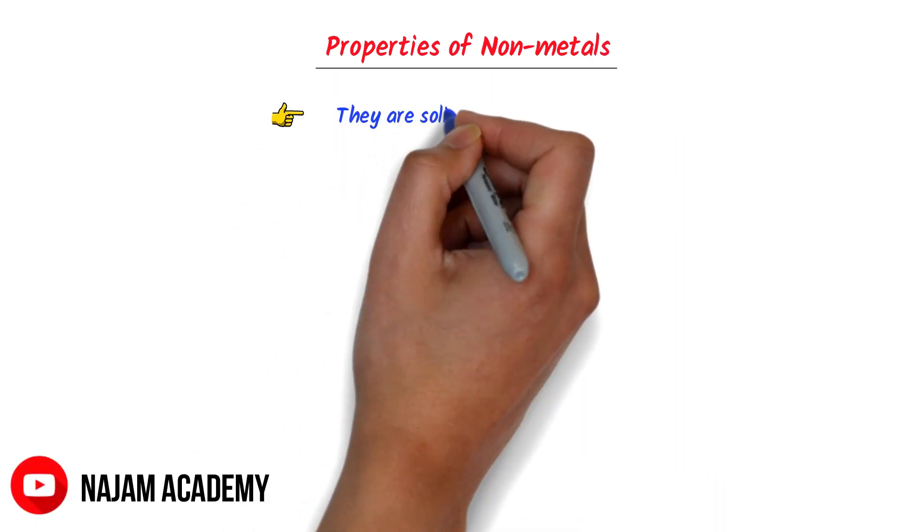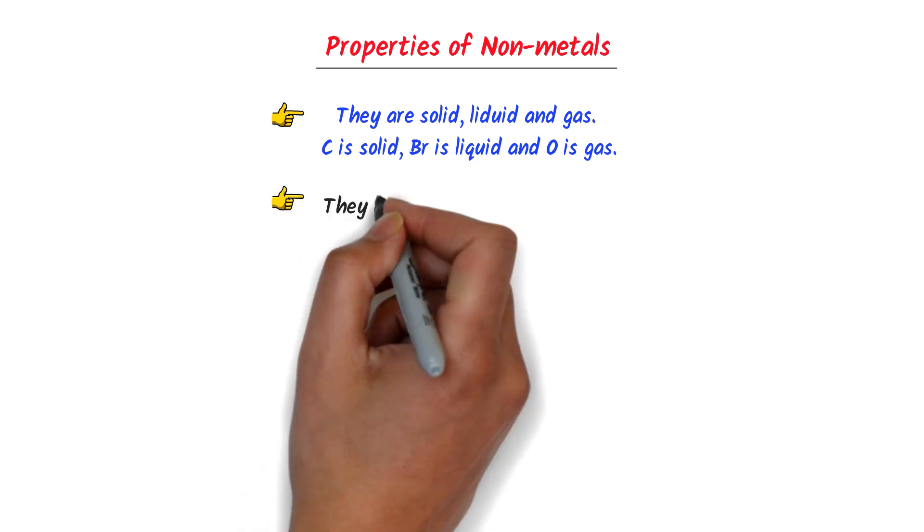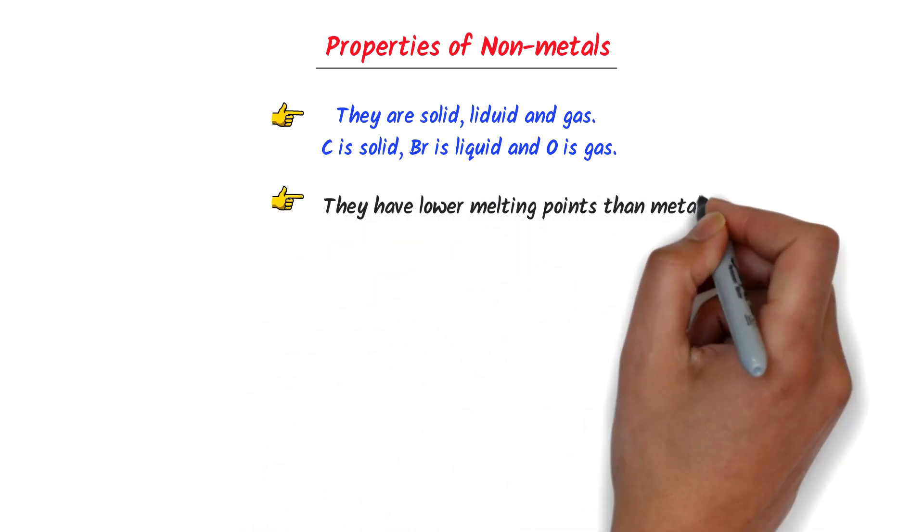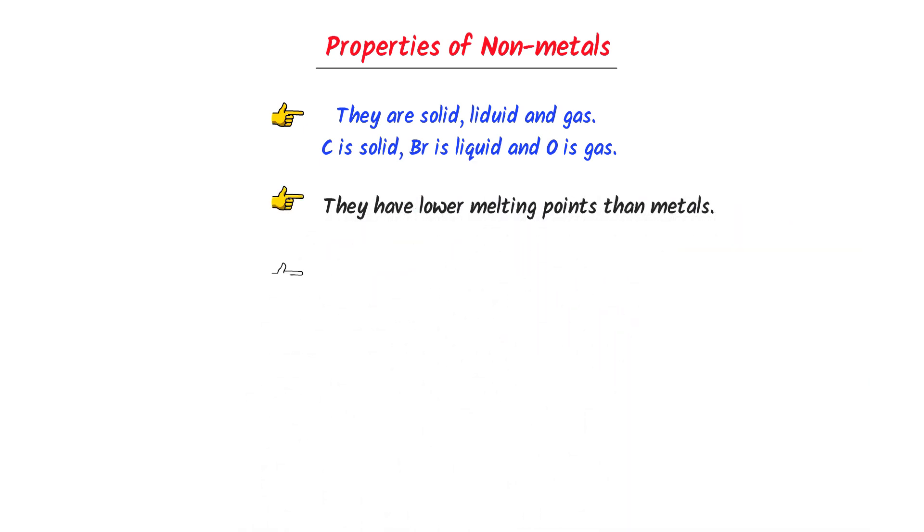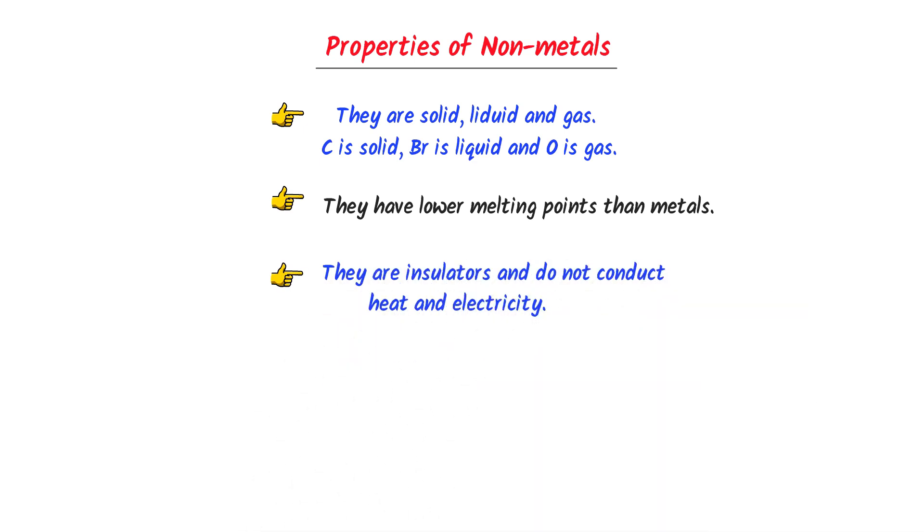Lastly, let me teach you the properties of nonmetals. Nonmetals are solid, liquid and gas at room temperature. For example, carbon like pencil is a solid, boron is a liquid and oxygen gas exists as a gas. Secondly, nonmetals have lower melting point than metal. Thirdly, they are insulators. It means that they do not conduct heat and electricity.